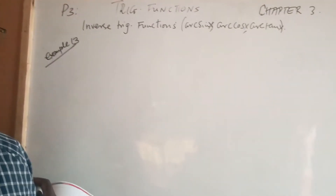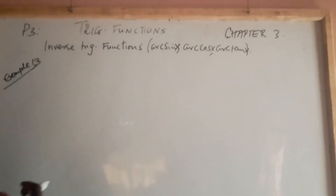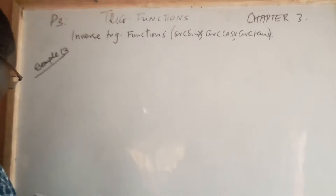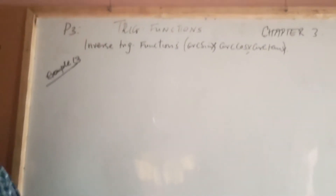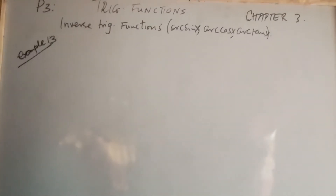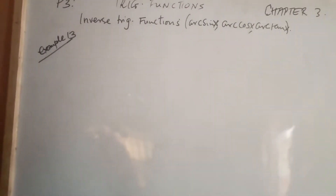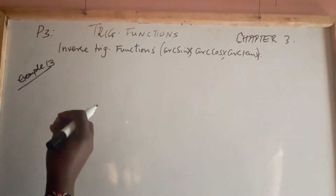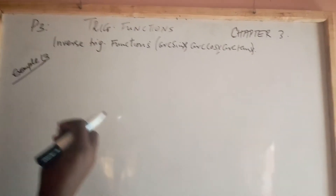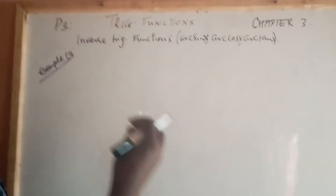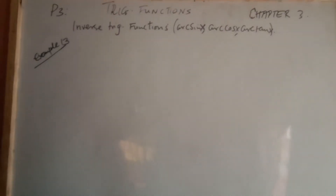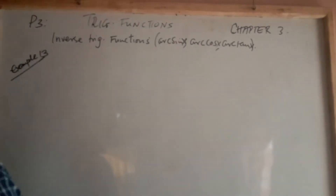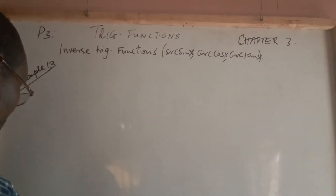The inverse function is the function that does the opposite of what the original function had done. We know that the domain of an inverse function is actually the range of the original function. Because we are talking about inverse functions, we need to identify the region where the original function was one-to-one, since we only have inverse functions of one-to-one functions.